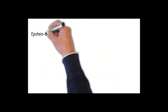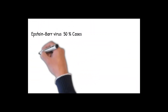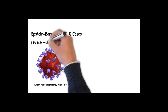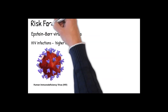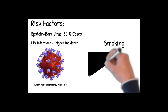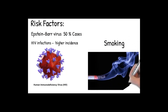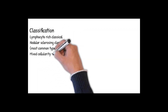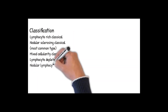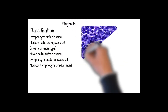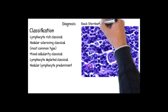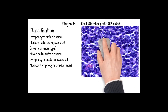Causes and risk factors: about half of the cases of Hodgkin lymphoma are due to Epstein-Barr virus (EBV). Those infected with HIV have a higher incidence of HL relative to an uninfected population. There is also increased risk in smokers. There are five types of Hodgkin lymphoma; nodular sclerosis classical HL is the most common, accounting for almost 70% of cases. Diagnosis is made by finding multinucleated Reed-Sternberg (RS) cells in lymph nodes.